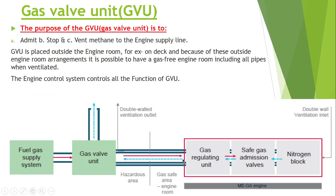As you can see, this is a block diagram representing how the system of a gas admission engine looks. There is a fuel gas supply system, after that there is a Gas Valve Unit, and after that there is a Gas Regulating Unit. From the Gas Valve Unit to the Gas Regulating Unit the pipeline is a double wall pipeline, but from the fuel gas supply system to the Gas Valve Unit it is a single pipeline.